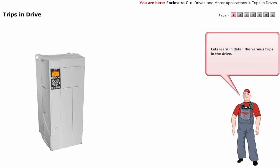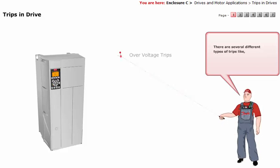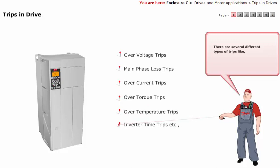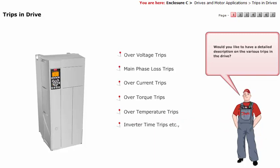Let's learn in detail the various trips in the drive. There are several different types of trips, like over voltage trips, main phase loss trips, over current trips, over torque trips, over temperature trips, inverter time trips, etc. The first two trips are the most commonly occurring trip situations. Click on the icon for a detailed description on the various trips in the drive.